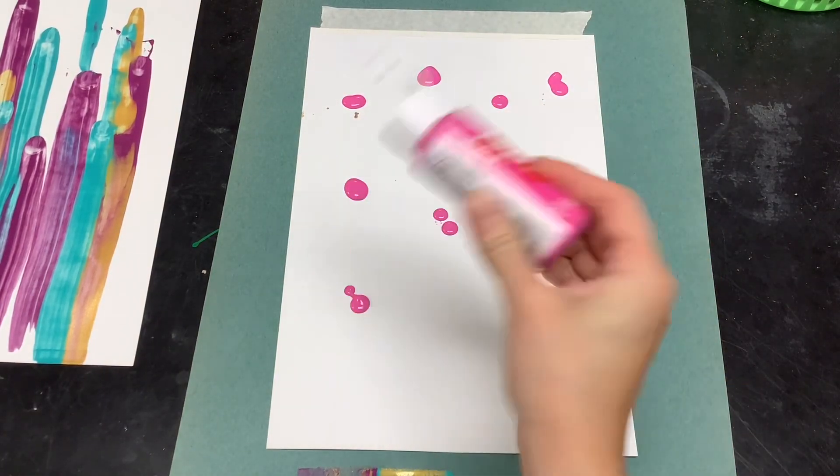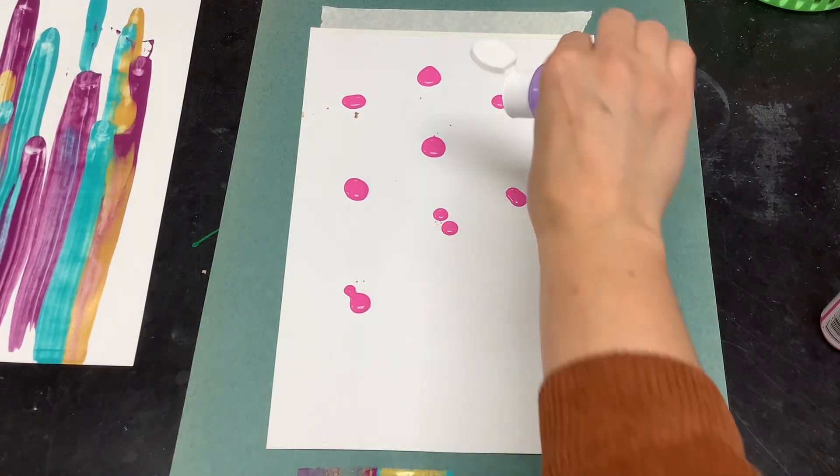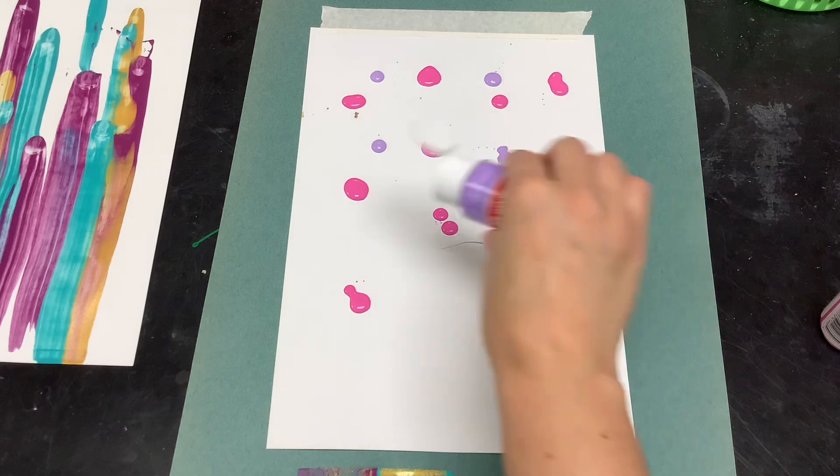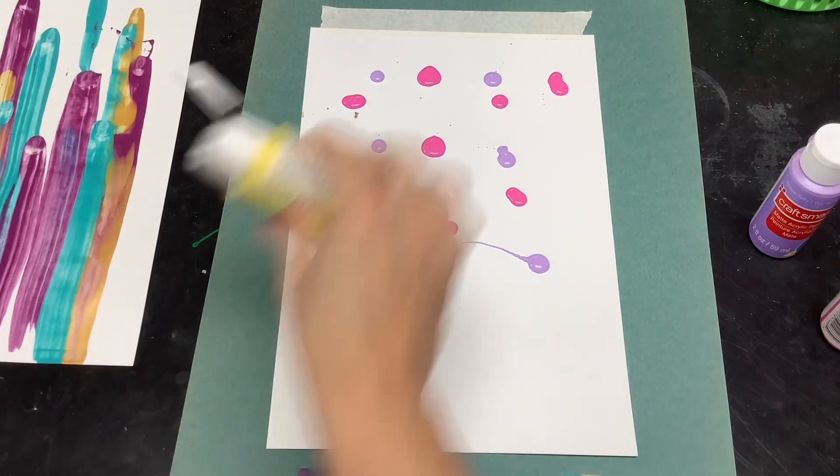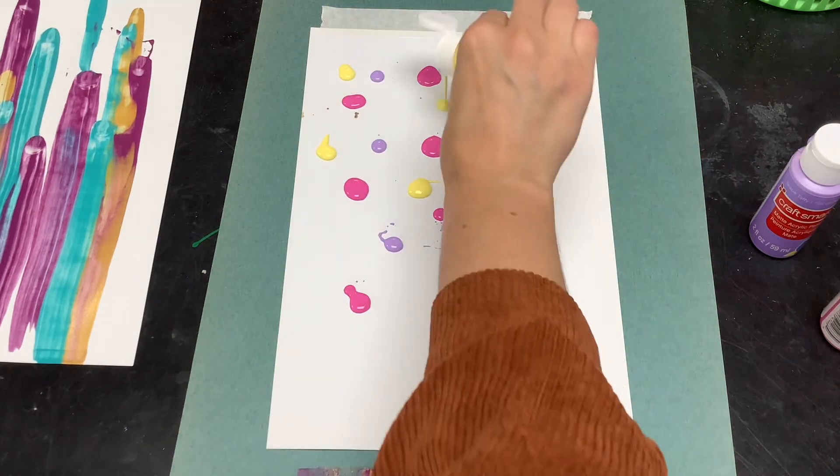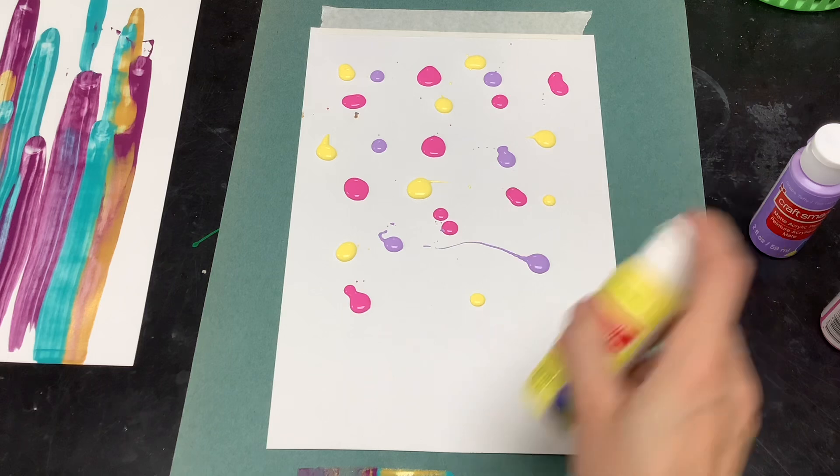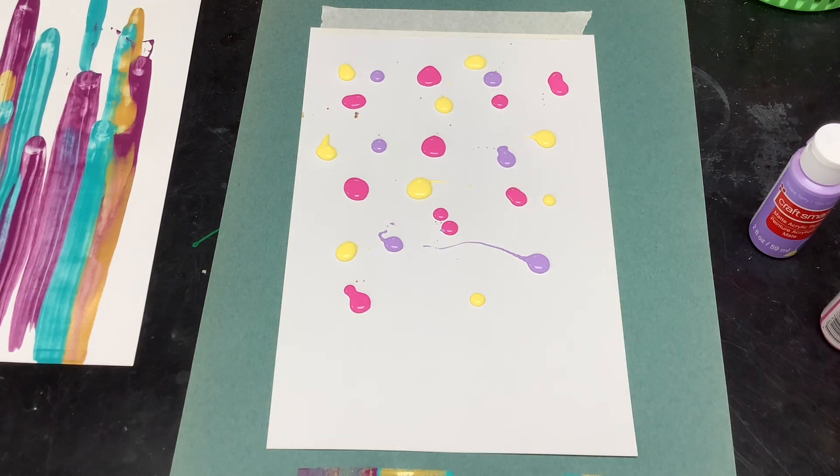Then you will do the same thing but with a different two or three colors, making dots. You can make your dots in a pattern or you can scatter them all around.